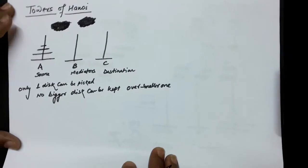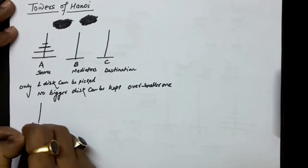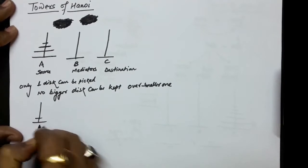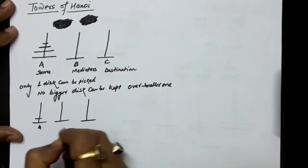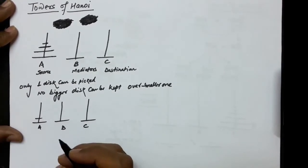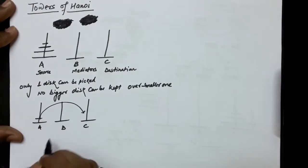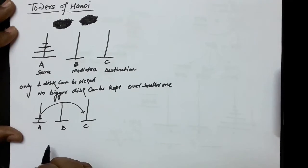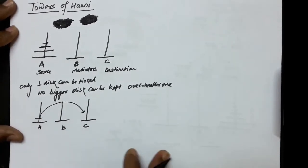So this is the problem. Let us try to find a solution. Now suppose we have only one disk on A. These are the towers A, B, and C. This disk can be transferred to the destination directly without taking the help of tower B, which is the mediator. So if we have only one disk, it can be transferred to the destination directly.